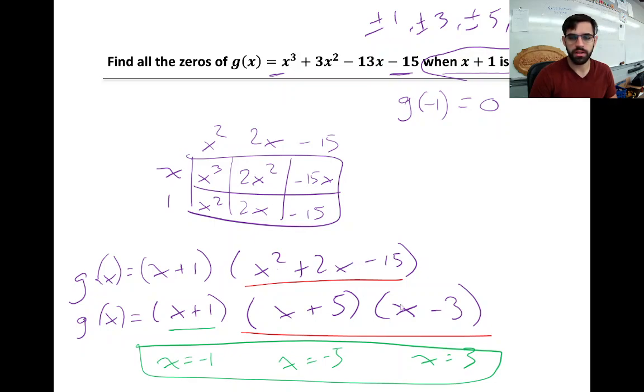So this one, we can just factor it by inspection. We could use box method, foil reverse, whatever you want to call it. But now that we have it factored out, we can identify our solutions. Our solutions are the x values that make this equation true. Or our roots, our zeros. These are the x values that make the whole thing equal to 0.